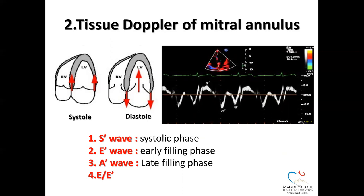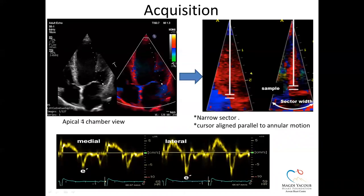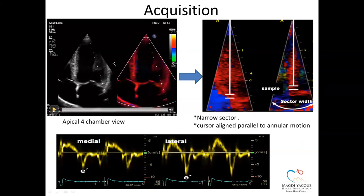Tissue Doppler imaging of the mitral annulus measures tissue velocity rather than blood velocity. During systole the mitral annulus moves toward the apex; during diastole it moves away from the apex, giving two negative waves. Four things to measure from tissue Doppler: the S-wave (upward displacement of the mitral annulus during systole), e' (early filling phase, coinciding with the mitral E-wave), a' (late filling phase, coinciding with the mitral A-wave), and the E/e' ratio.